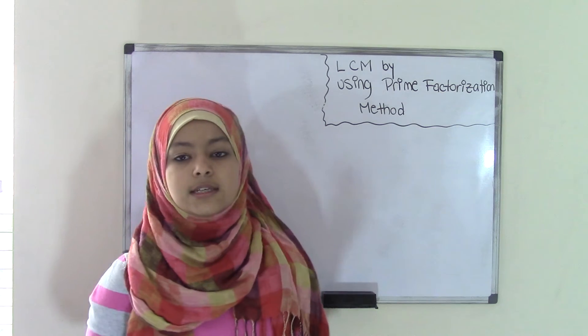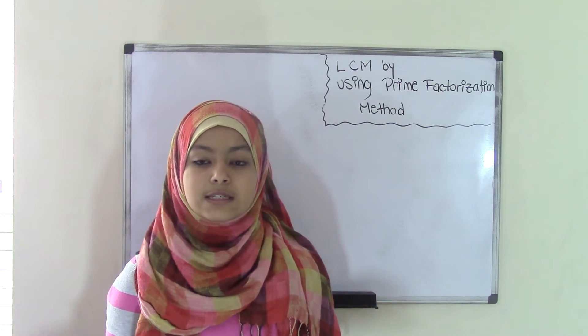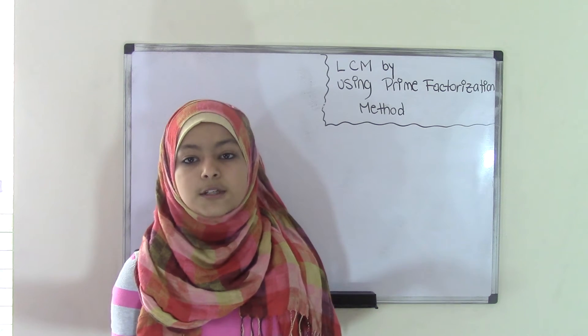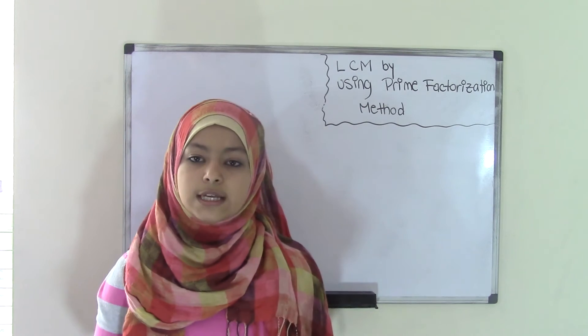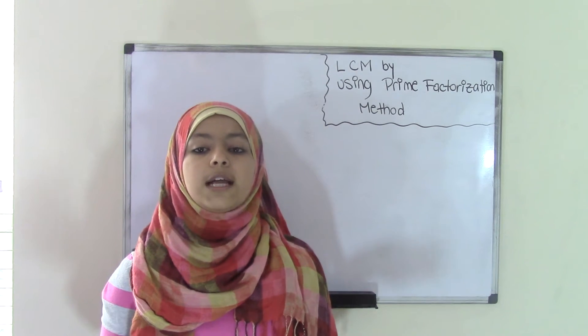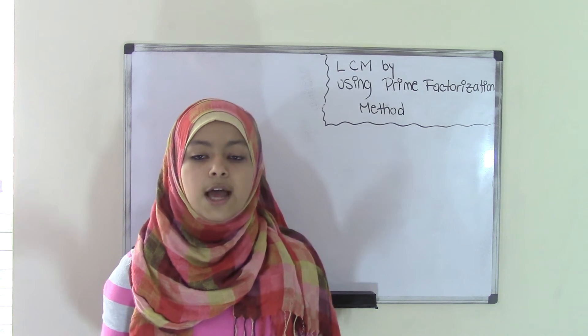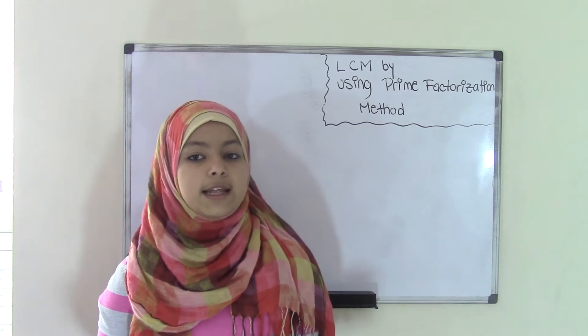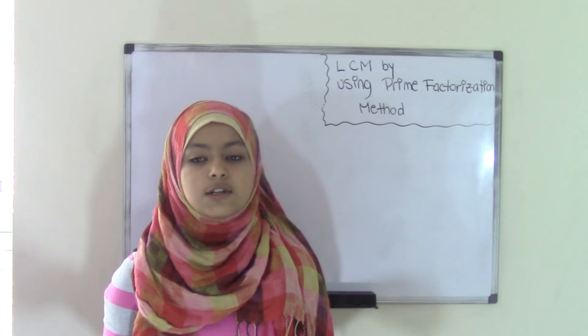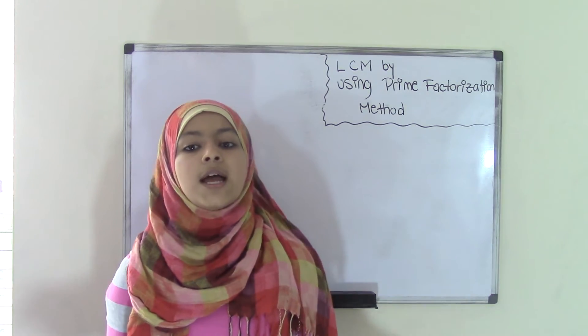This time this is a different method that you can use to find the LCM without actually listing all the multiples. You can do that by listing the factors of the numbers using the prime factorization method, where you're going to be creating prime factor trees. Then you're going to find the factors and the LCM. This is a really easy topic as long as you take it step by step.